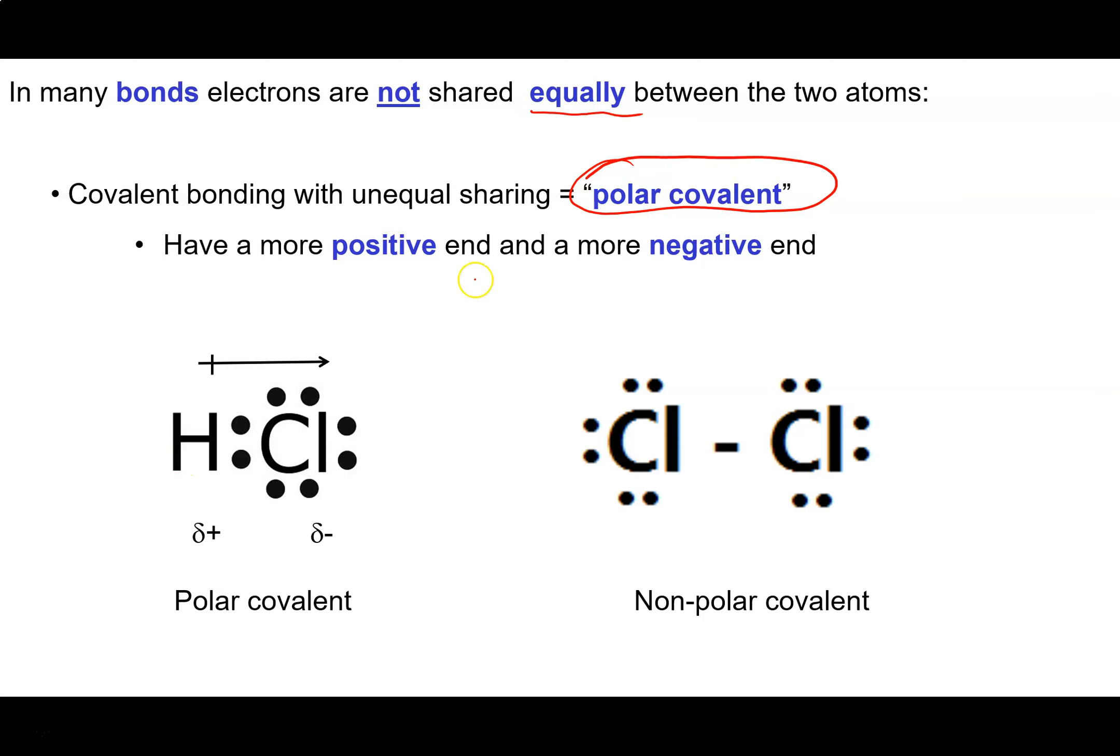So in the hydrogen molecule that we just looked at, the electrons don't have a greater affinity for one or other of the two atoms in the bond. So they sit exactly halfway between the two atoms.